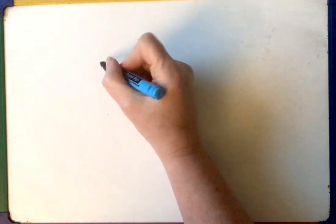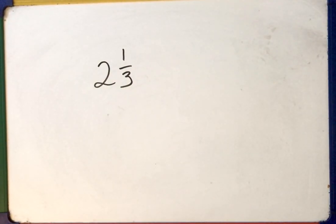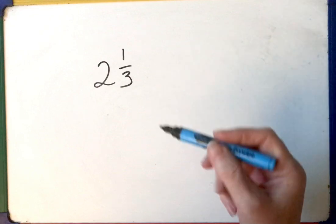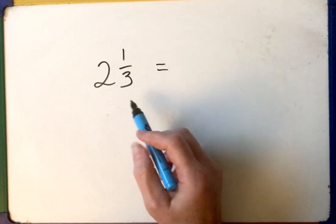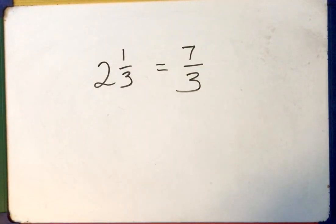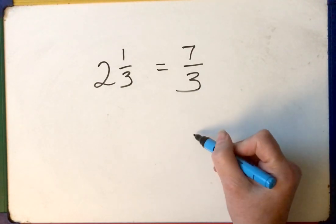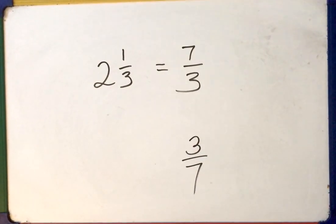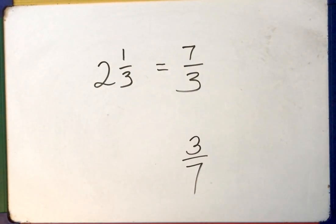But what about the dreaded mixed number? What if I want the reciprocal of two and a third? Golden rule: see a mixed number, turn it into an improper fraction. Two and one third is seven thirds — two threes are six, plus one is seven thirds. Same value, different appearance. Now I want the reciprocal, so I just turn that upside down. The reciprocal is three sevenths. If you're given a mixed number, turn it into an improper fraction, then turn the fraction upside down.